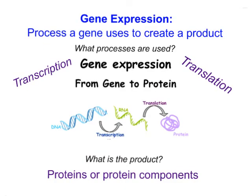I used the word gene expression — that is a term that means the process a gene uses to create a product. Here I gave a little diagram showing those processes. We have transcription, where DNA is used to form a strand of RNA. We have translation, where the RNA code is translated into a string of amino acid chains, and then they fold up into the final functioning proteins. These are the processes used by gene expression to create proteins.